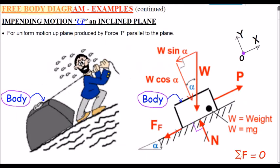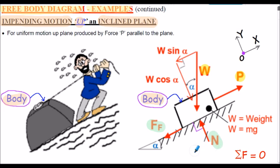From our previous work we're considering here impending motion up an inclined plane. On the right-hand side we have the free-body diagram with applied force P, weight force of the body, friction force shown down the incline (since impending motion is up), and the normal reaction force from the inclined plane. This is a more complicated free-body diagram because we need to resolve forces parallel and perpendicular to the incline. This is a static equilibrium condition — the body is just about to move up — so we apply Newton's first law.